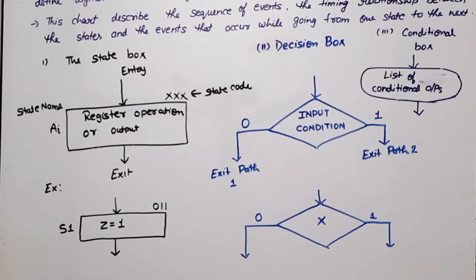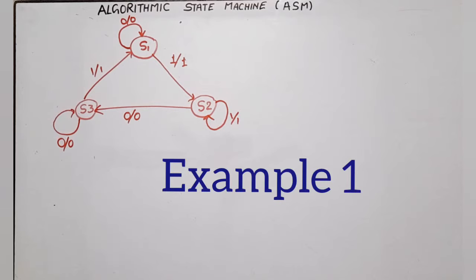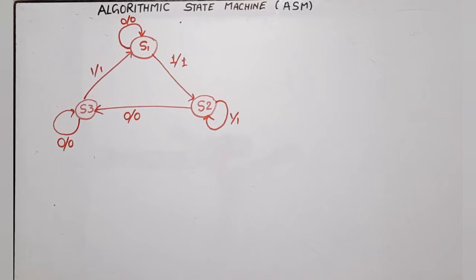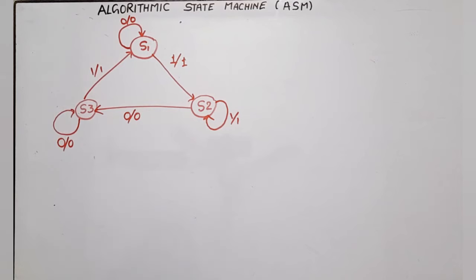Now let's take an example. First I will do a state diagram with one output bit, then we will take an example with two output bits. I am going to discuss one example — this is a state diagram, and for this state diagram I will draw the equivalent ASM chart. First, let us look at this state diagram. In this case, there are three states: S1, S2, and S3. There is no binary code assigned to these states.